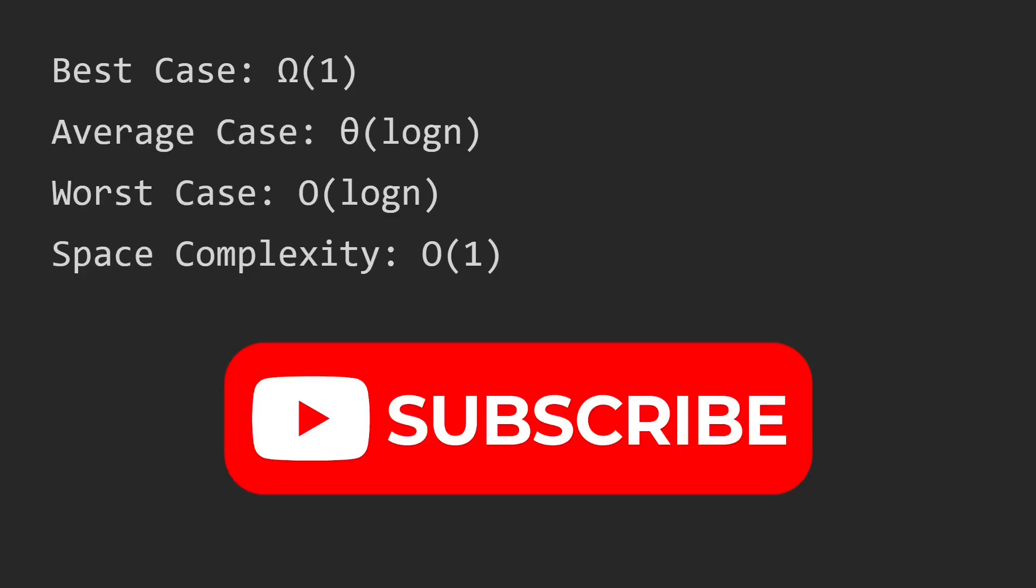The best case is O(1) because let's say you calculate the mid and you find the number right away at mid. The average and worst cases are O(log n). That's because every time you iterate through the while loop you get rid of half of the array. Let's say you have 32 numbers in the array, the next iteration you have only 16, and then 8, and then 4, and then 2. That's basically a logarithmic function.